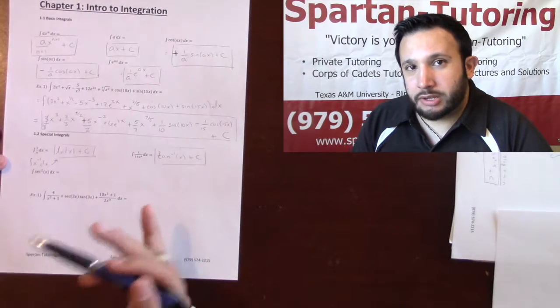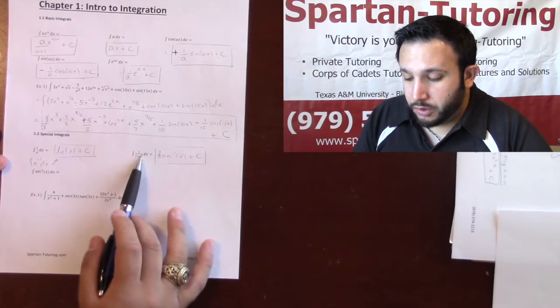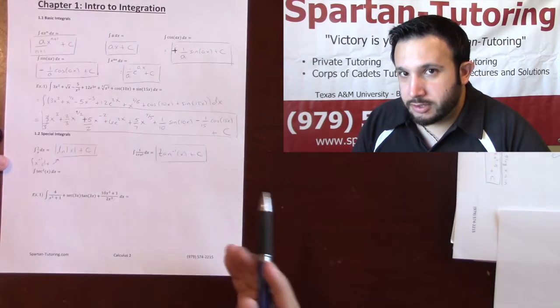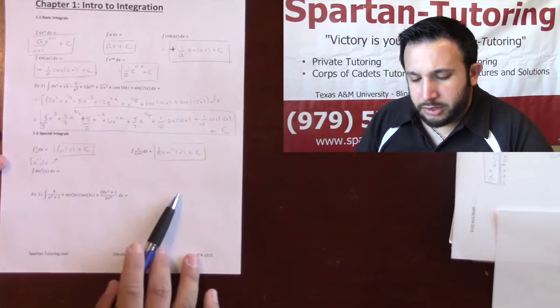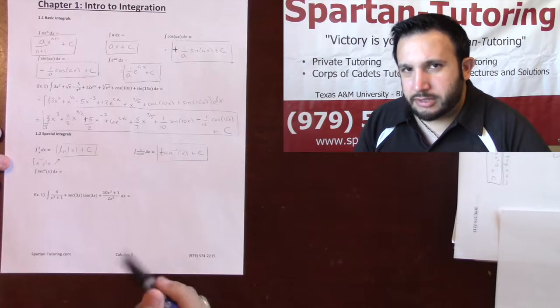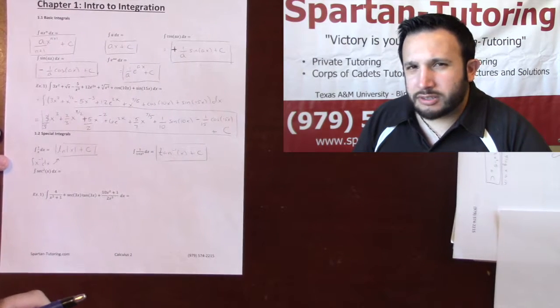which means you still need to remember the derivative of all your arc trigs. That's not going away. You need to recognize that when I do see the derivative of an arc trig, the anti-derivative of that would be its associated arc trig.